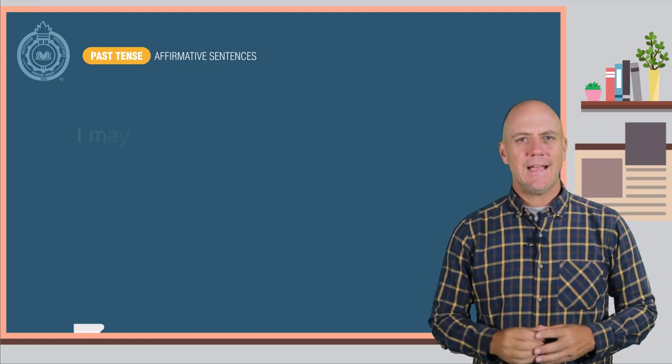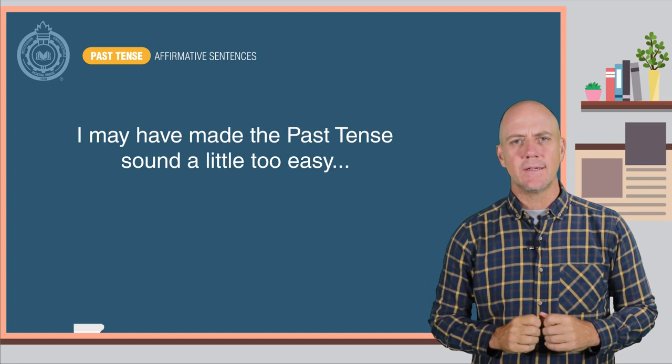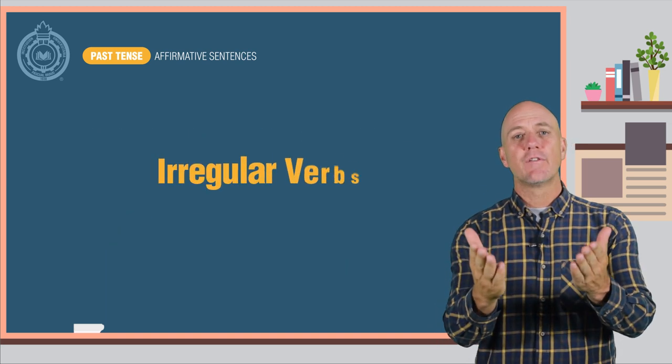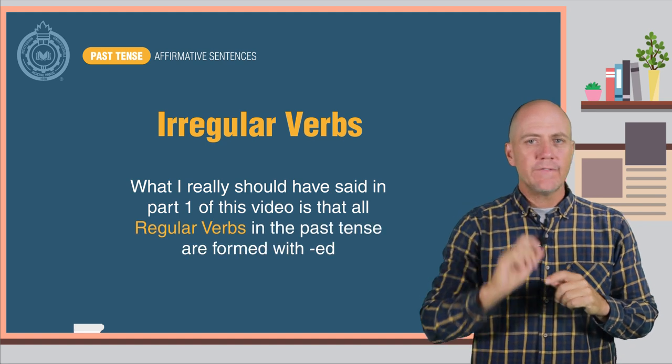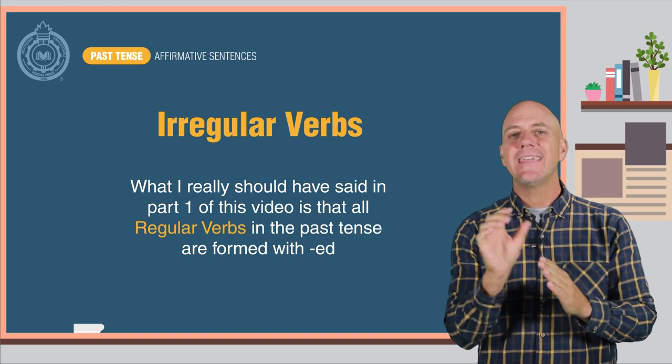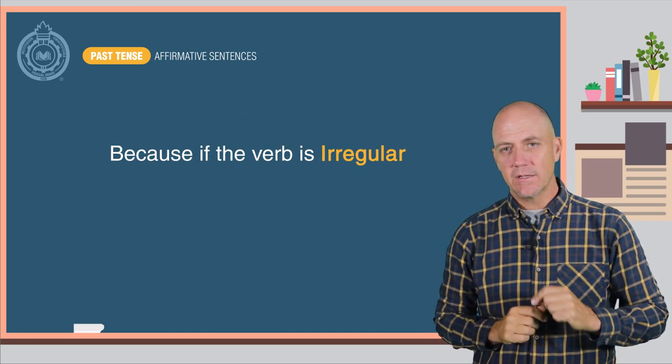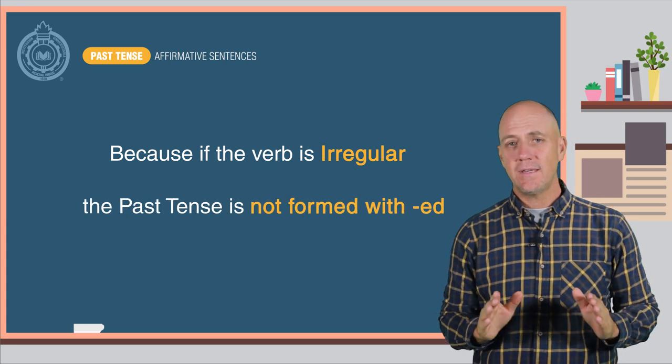Okay, I may have made the past tense sound a little too easy. There is one big problem, irregular verbs. What I really should have said in part one of this video is that all regular verbs in the past tense are formed with "-ed". Because if the verb is irregular, the past tense is not formed with "-ed".